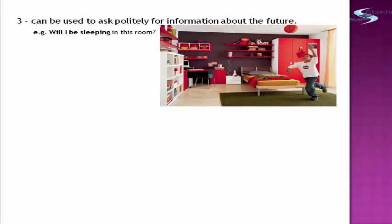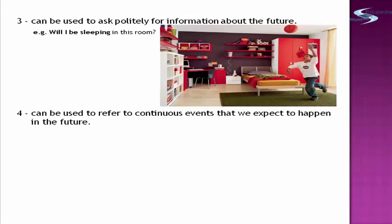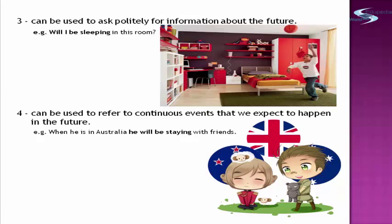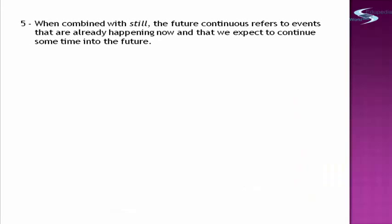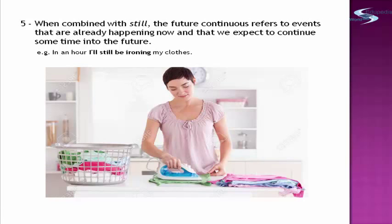Number four: it can be used to refer to continuous events that we expect to happen in the future. Example: 'When he is in Australia, he will be staying with friends.' He will be welcome in Australia, so 'will be staying' is the future progressive tense. The fifth usage: when combined with the word 'still,' the future continuous refers to events that are already happening now and that we expect to continue sometime into the future. Example: 'In an hour, I will still be ironing my clothes' — because there are still clothes in the basket.